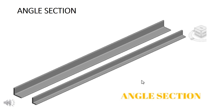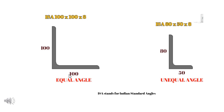Let's take the angle sections. This is an L-shape — it's called an angle section. We need to specify the length and other specifications for angle sections. This L-shape is called an angle section, and its two legs are mutually perpendicular.